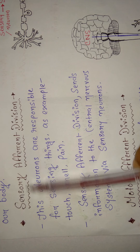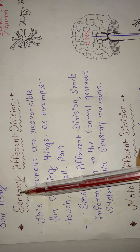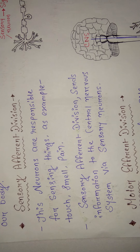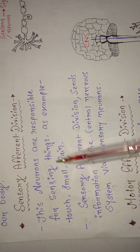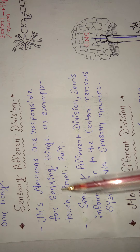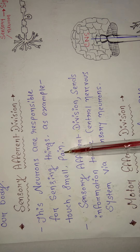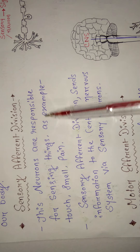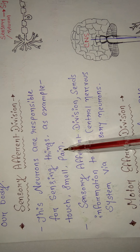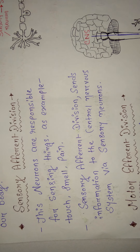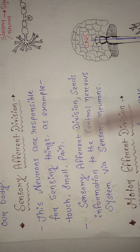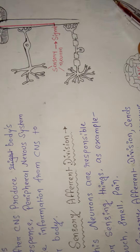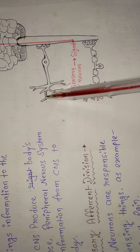The sensory division is responsible for sensing things — any kind of sense or feeling like touch, smell, and pain. The sensory afferent division sends information to the central nervous system via sensory neurons.